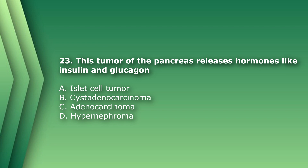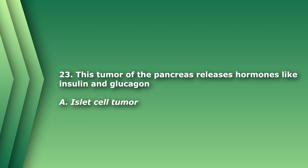Question 24: This tumor of the pancreas releases hormones like insulin and glucagon. A) islet cell tumor, B) cystadenocarcinoma, C) adenocarcinoma, or D) hypernephroma. The answer is A) islet cell tumor, also known as a pancreatic neuroendocrine tumor.